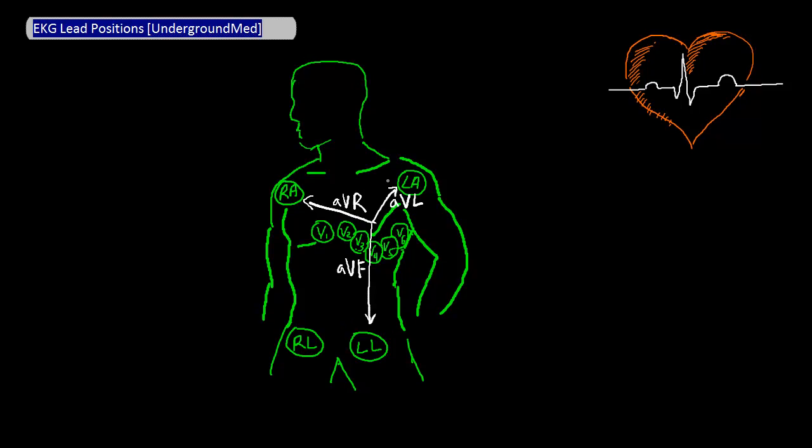The other three limb leads displayed on a standard 12 lead EKG are 1, 2, and 3. Where are those? Lead 1 represents the voltage that goes from the right arm to the left arm, something that we can determine from the RA and LA leads, and hence, we don't need another lead for.